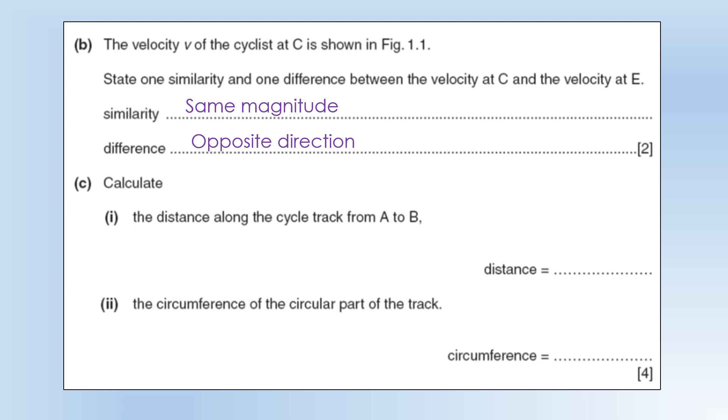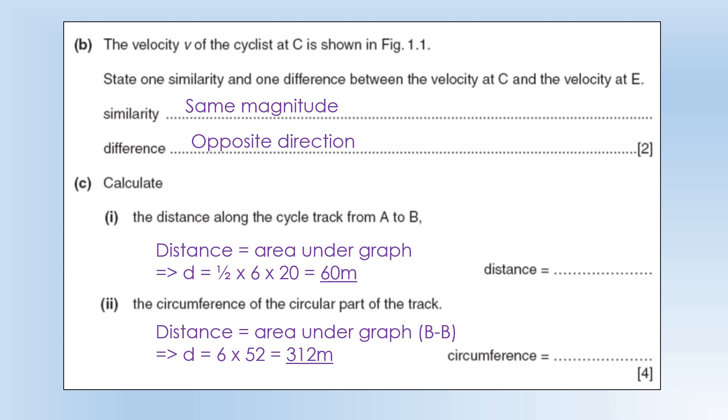Calculate the distance along the cycle track from A to B. We're going to find the area under the graph again. It's a triangle so we use half base times height. To find the circumference of the circuit part of the track, I'm going to find the area under the graph from B to B - essentially how far they have to travel before they get back to B. That's just going to be the circumference.